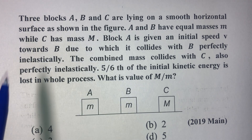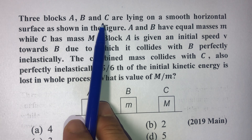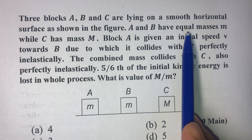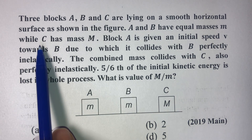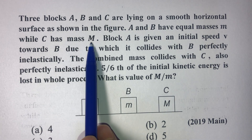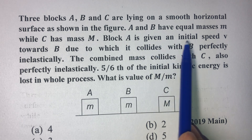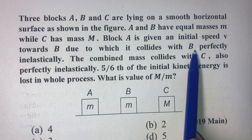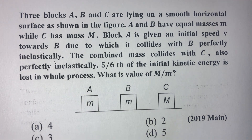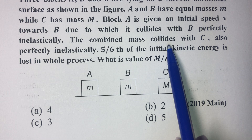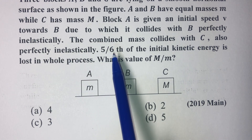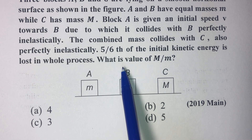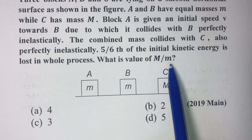In today's question, three blocks A and C are lying on a smooth horizontal surface as shown in figure. A and B have equal mass m while C has a mass capital M. Block A is given an initial velocity V towards B, due to which it collides with B perfectly inelastically. The combined mass collides with C also perfectly inelastically. Five-sixths of the initial kinetic energy is lost in the whole process. What is the value of M to small m?